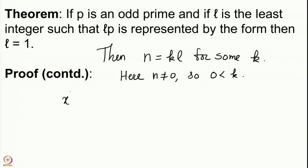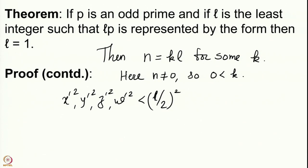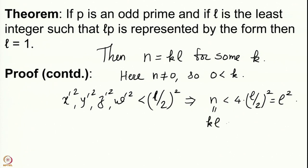Further, each of x′², y′², z′², w′² is less than (l/2)². Since l is odd, l/2 is not an integer, so each of x′, y′, z′, w′ is strictly less than l/2 in absolute value. Their squares are less than (l/2)², so their sum n < 4·(l/2)² = l². Since n = kl < l², we have k < l.